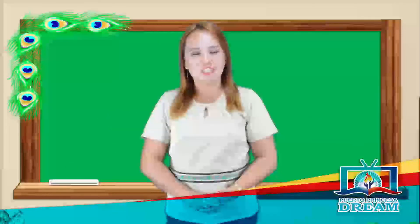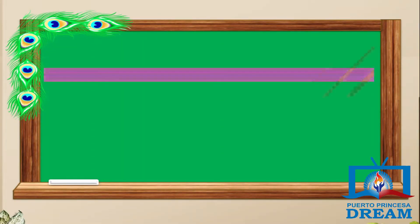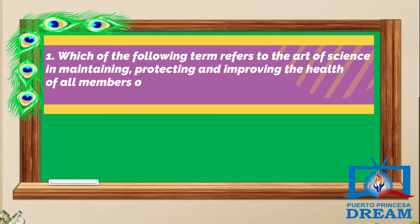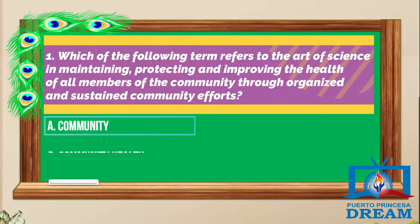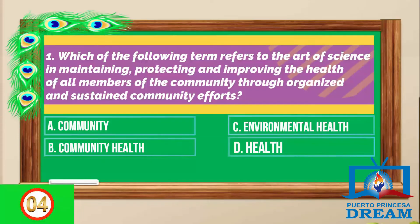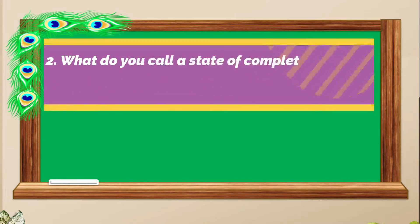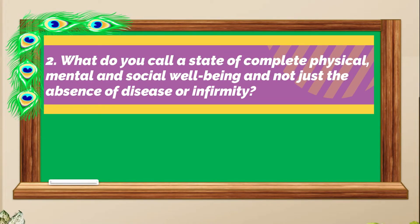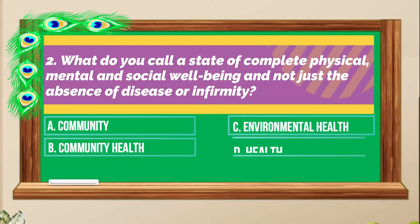Before we end, let's assess how much you have learned today. Choose the correct answer from the given choices. Which of the following terms refers to the art and science of maintaining, protecting, and improving the health of all members of the community through organized and sustained community efforts? A. Community, B. Community health, C. Environmental health, D. Health. Next question: What do you call a state of complete physical, mental, and social well-being, and not just the absence of disease or infirmity? A. Community, B. Community health, C. Environmental health, D. Health.